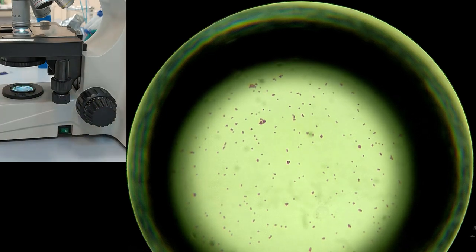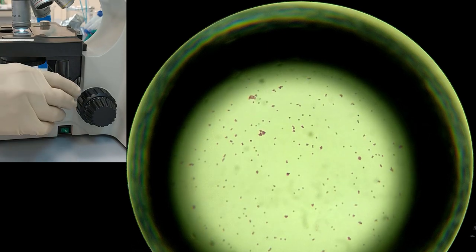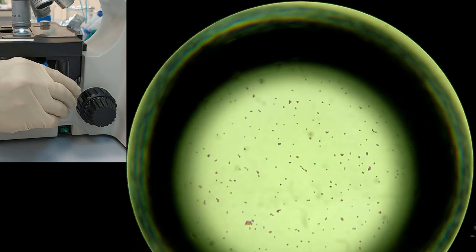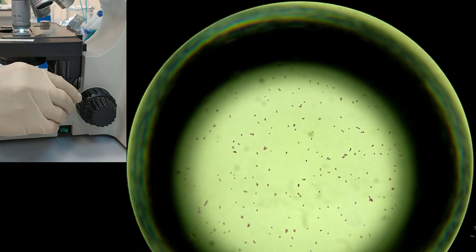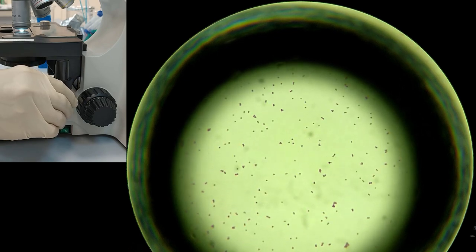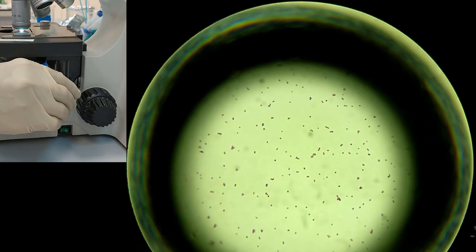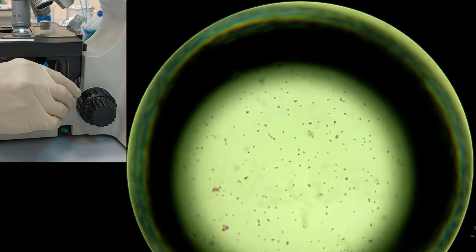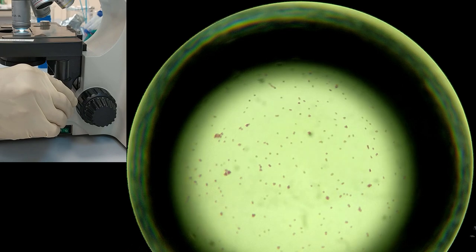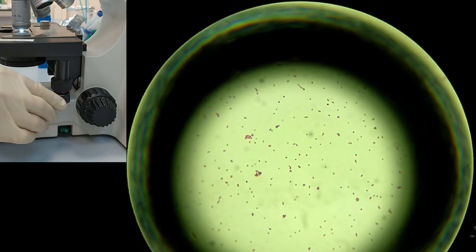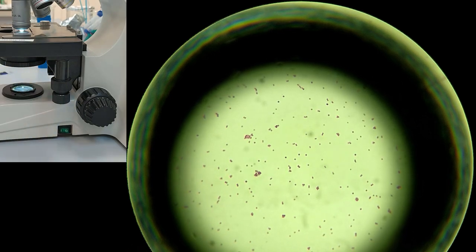When we focused, we can use the stage controls to find the best view for ourselves, and then try to draw these cells in your notebook. Now they are stained purple, and this means that they are gram-positive cells.